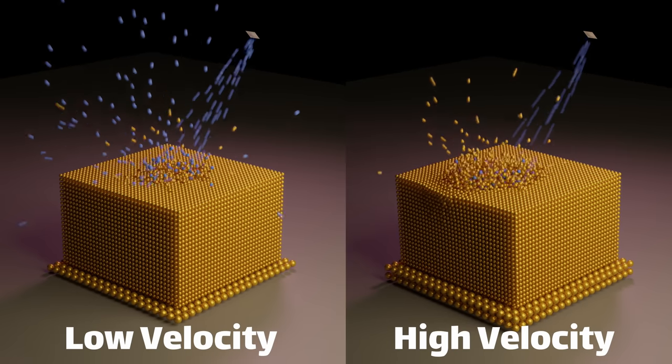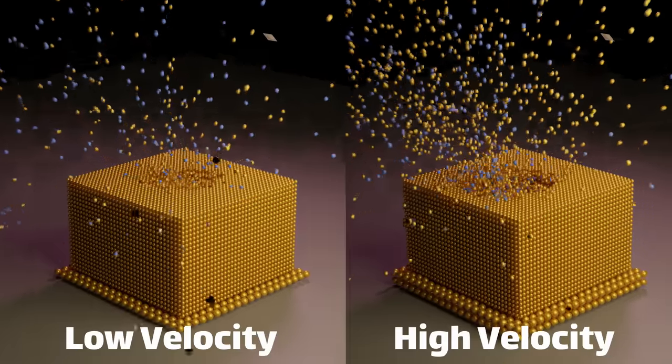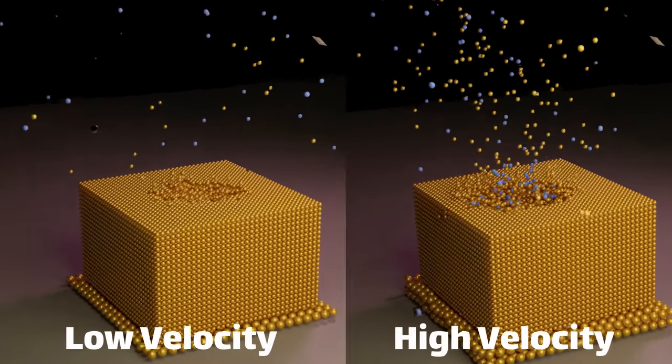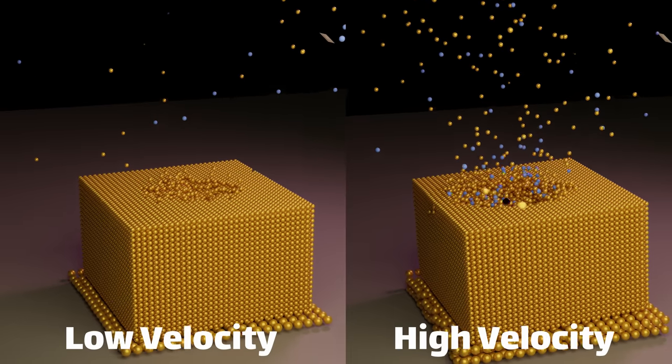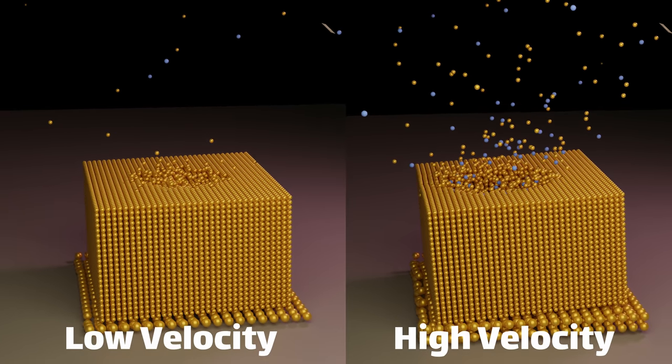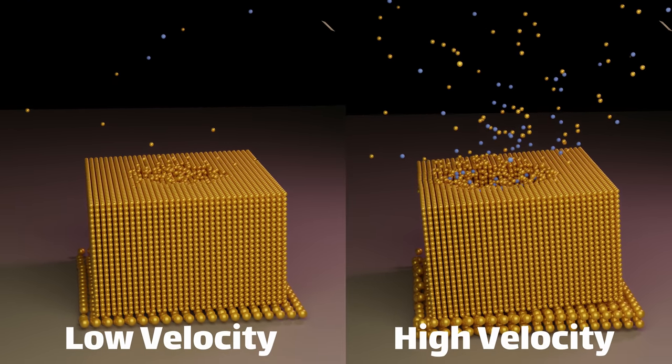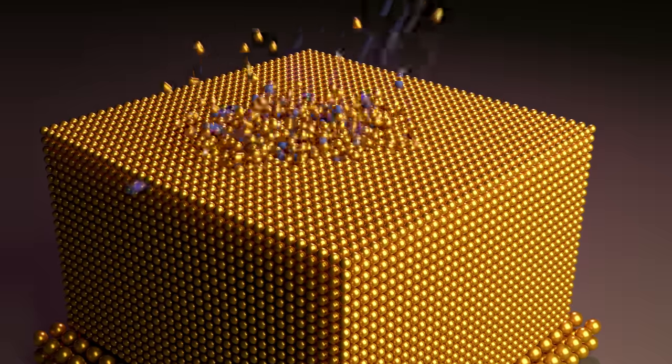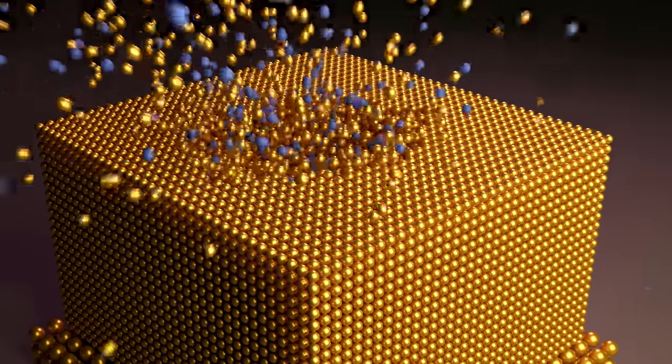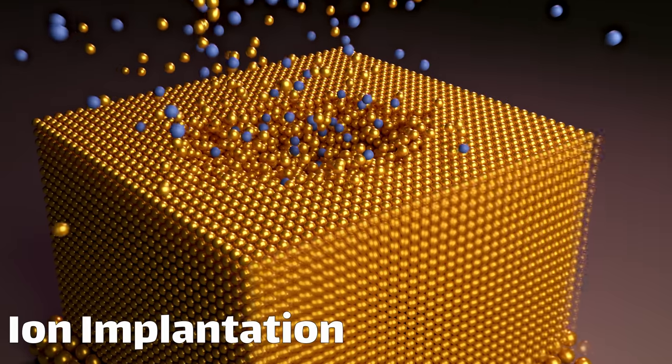If we change how fast the argon is being accelerated, we can change the depth and size of the crater. Because more speed of the particles means more kinetic energy, which is transferred into the sample. In all the simulations, you can see argon being embedded into the sample. This actually happens in real life, and it's one of the reasons argon is used as opposed to a different gas. The process is called implanting, and it's generally an unwanted side effect.